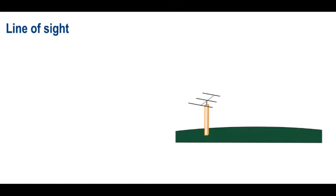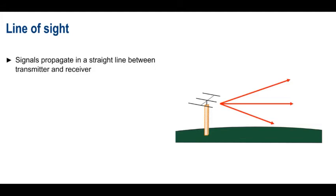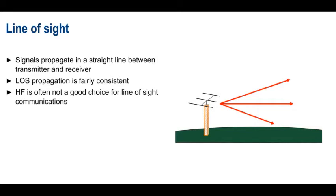Line of sight is fairly easy to understand. Signals propagate in a straight, unobstructed path between the transmitter and the receiver. Line of sight is the only HF propagation mode which is fairly constant. Your ability to use line of sight to communicate with a given station doesn't change much over periods of minutes, hours, days, months, years, etc. That said, HF isn't a very good choice for line of sight communications, and it's rarely used for this purpose.